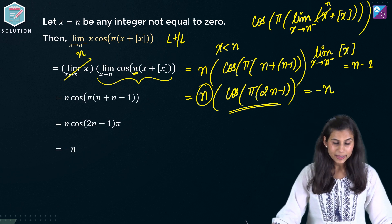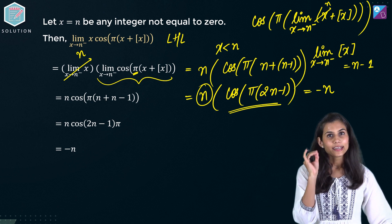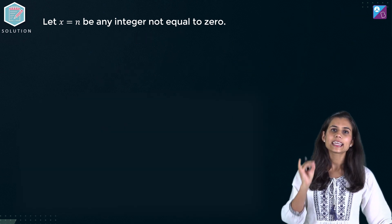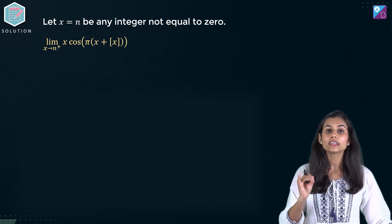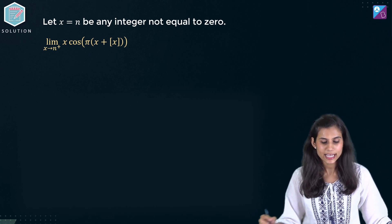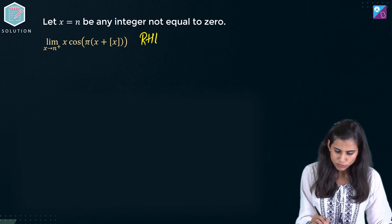Then replicating the exact same reasoning, exact same approach, you can compute the right hand limit as well. What will that come out to be?